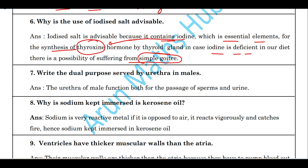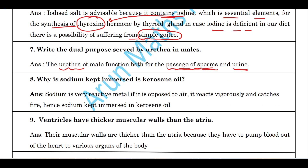Next question: the dual purpose served by the urethra in males. The urethra in males functions both for the passage of sperms as well as urine.